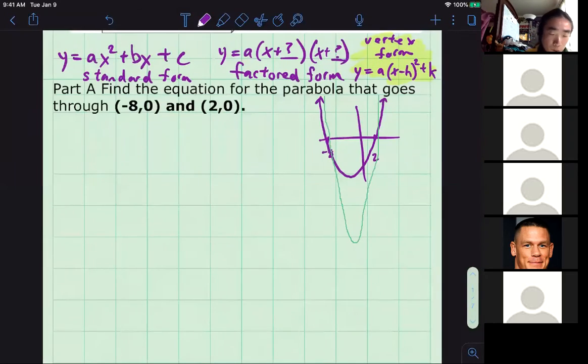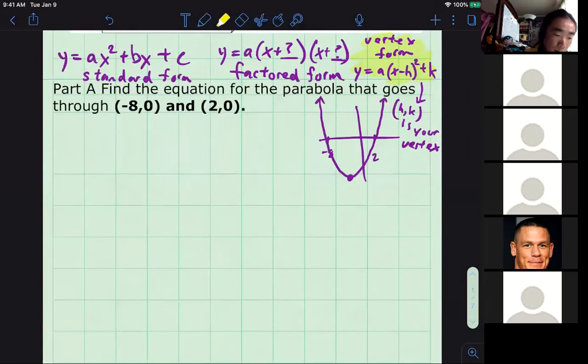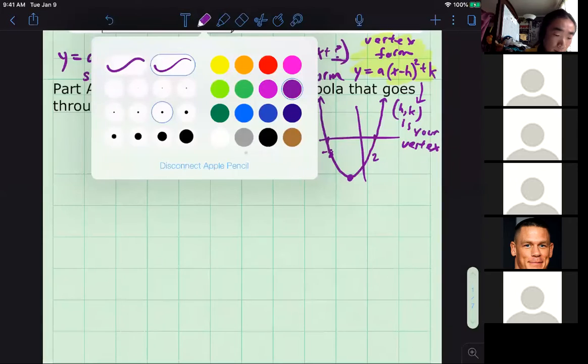And then the newest stuff is something called vertex form. One way it could look like is a times (x minus h) squared plus k. That's the newest bit of information. It's useful for graphing because h comma k, those numbers, is your vertex. Think about it as graphing form. It helps us to sketch parabolas.